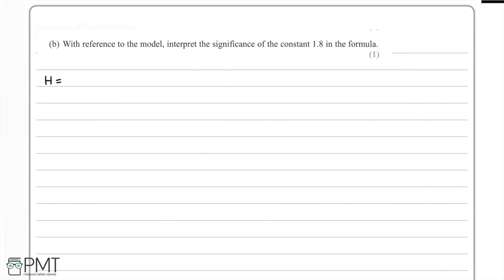In part B, we're asked to interpret the significance of the constant 1.8. Looking at the formula h = 1.8 + 0.4d − 0.002d², the value 1.8 is the only term without a d variable. So when d = 0, h = 1.8. Therefore, 1.8 represents the initial height of the arrow above the ground.